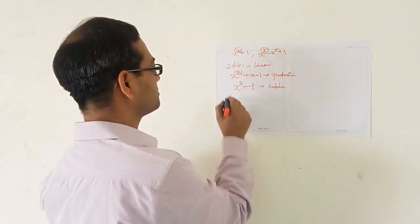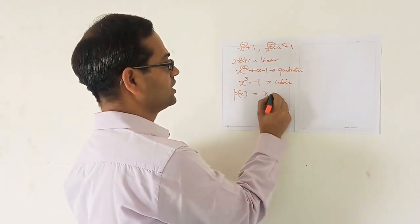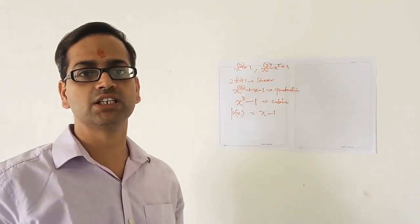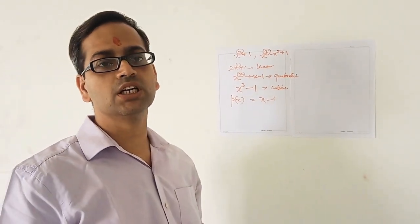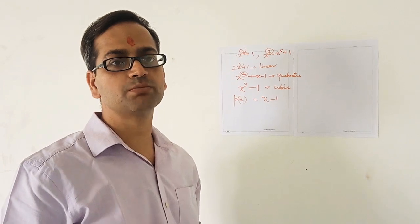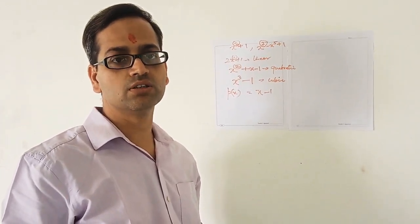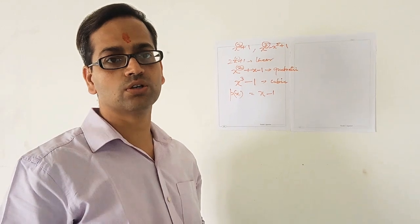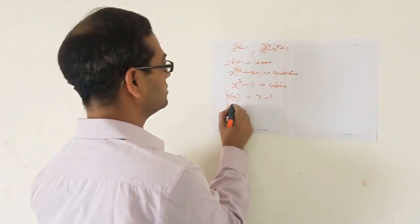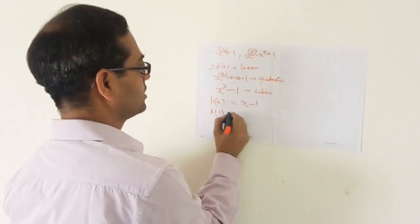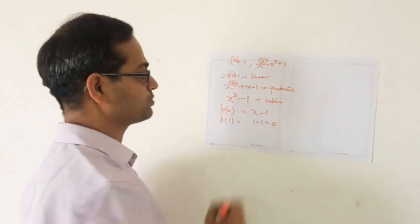Now we will discuss the roots or zeros of a polynomial. Suppose p(x) is a polynomial in x — for example, p(x) = x - 1, which is a linear polynomial. If there is some real number a for which p(a) equals 0, then that number a is said to be a zero, root, or solution of the polynomial. For example, if I put x = 1, then 1 - 1 = 0.